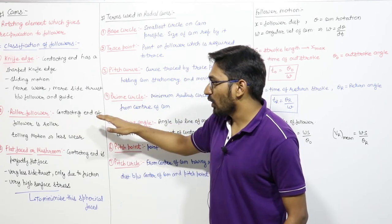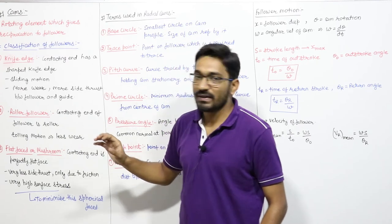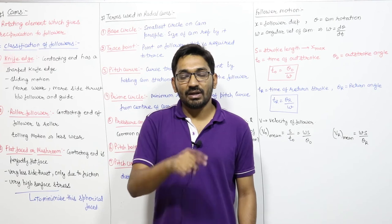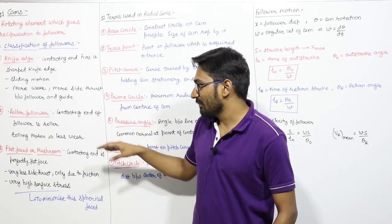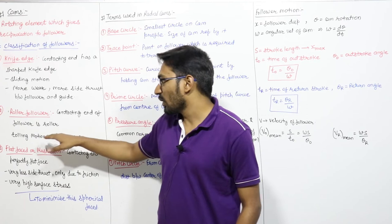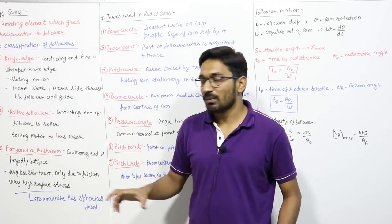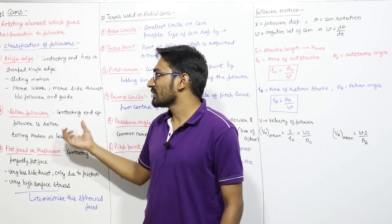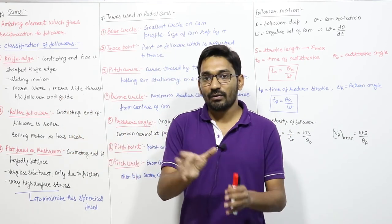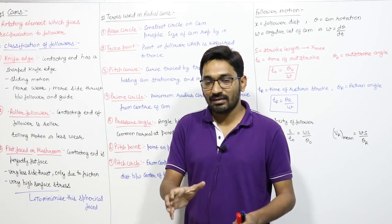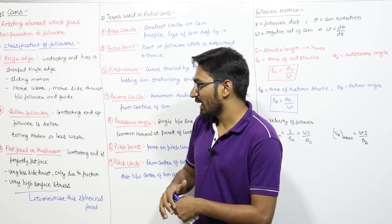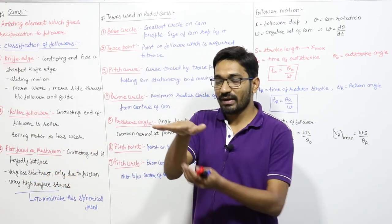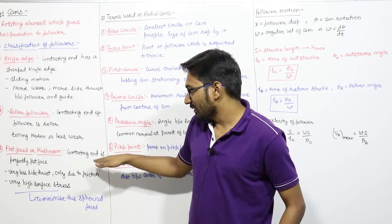In the roller follower, a roller is attached at the end which is in pure rolling contact with the cam. Because of rolling motion, wear is very less. However, side thrust still acts between the follower and the guide. Next is the flat faced or mushroom follower, in which the follower has a perfectly flat face at the contacting end.